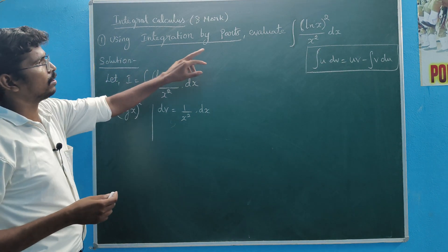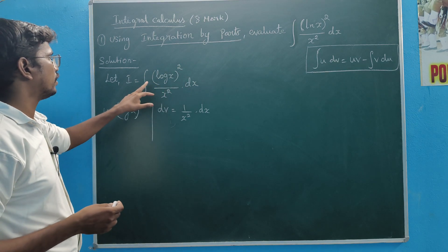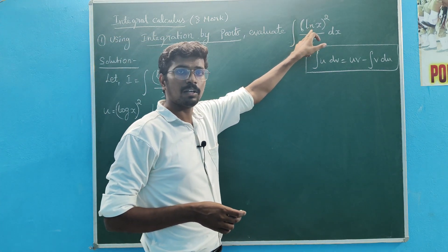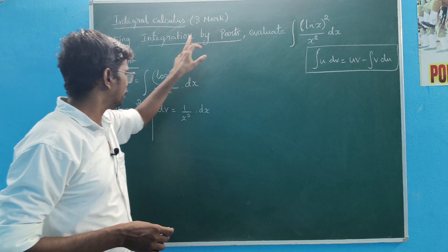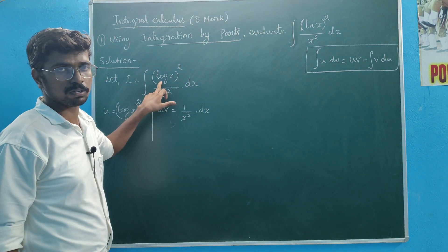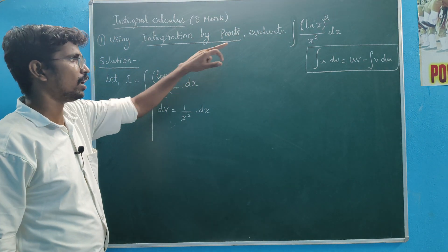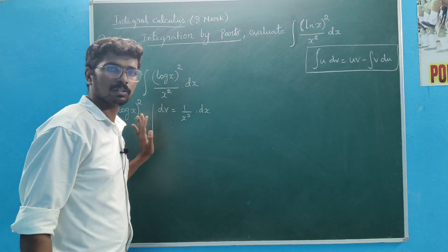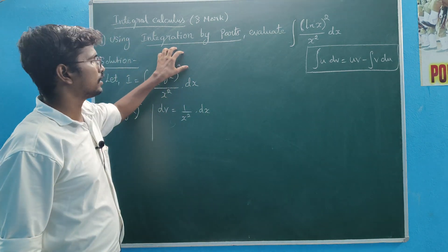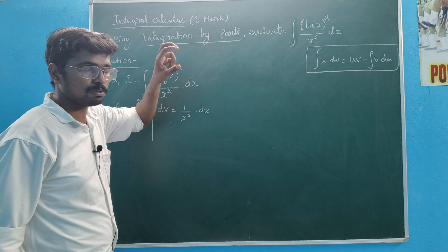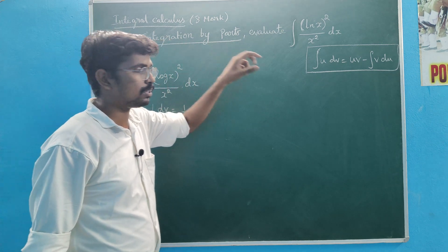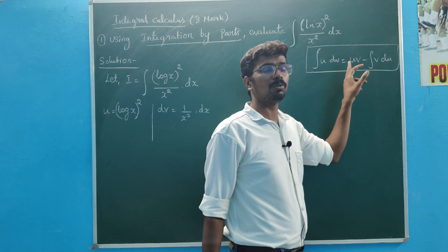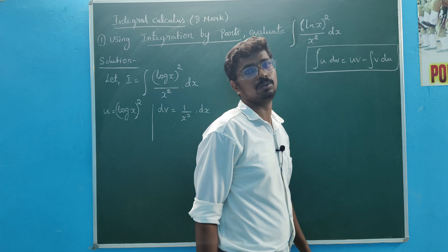What do we have to do first? We have to do this: the meaning of log x whole square. So log x whole square divided by x square dx — integration by parts. We have to use the formula: integral of u dv equals uv minus integral of v du.